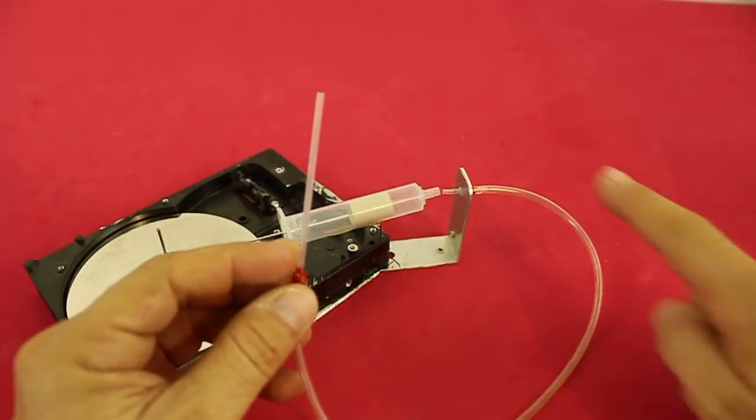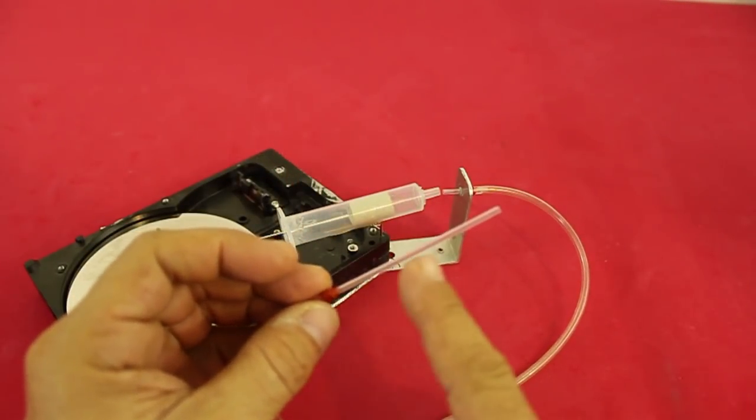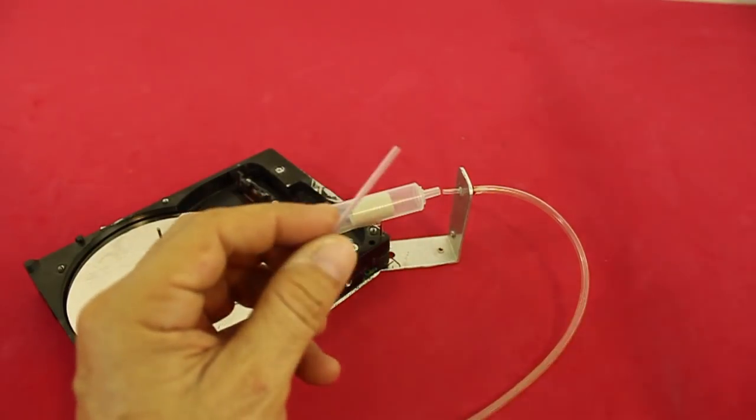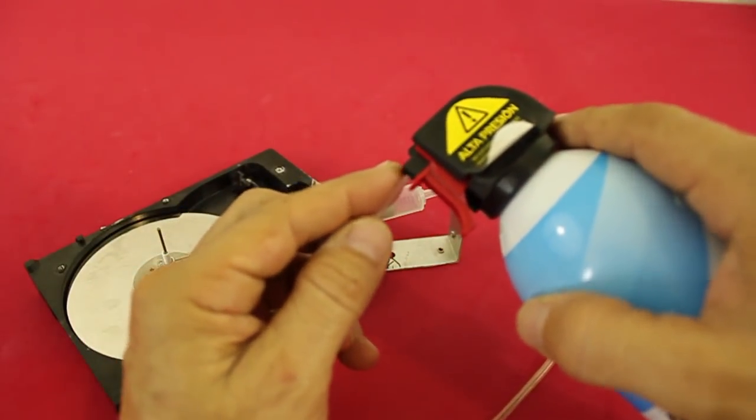The other end of the hose is connected to the small tube that goes to the compressed air can.